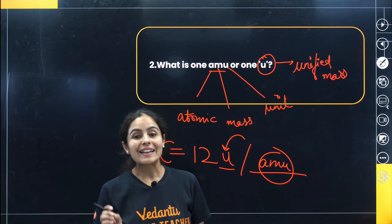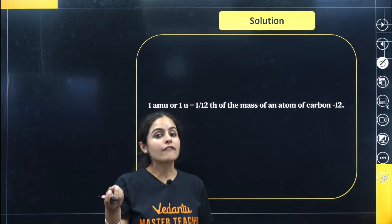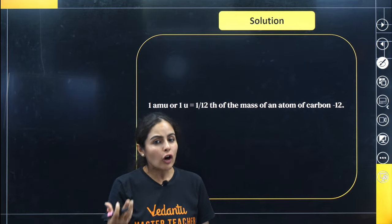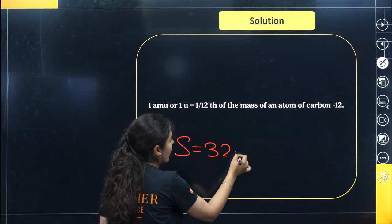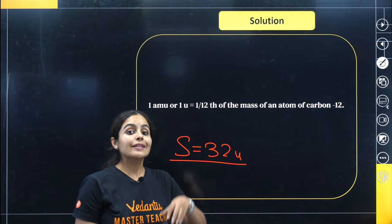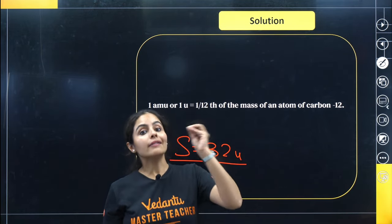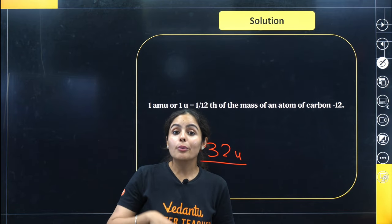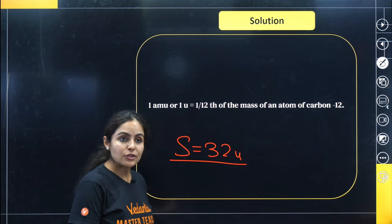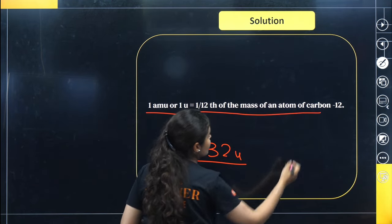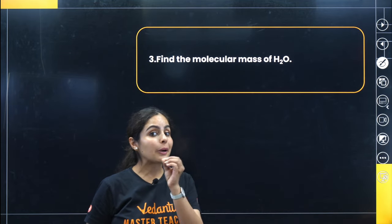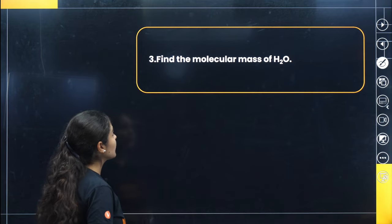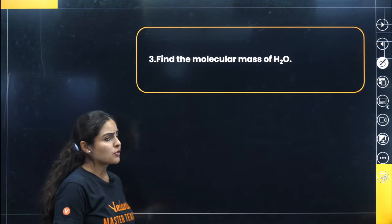So 'u' is unified mass, which is the unit of relative atomic masses. One AMU or one u is defined as one-twelfth the mass of a carbon-12 atom. For example, if sulfur's mass is 32u, it means sulfur is 32 times heavier than one-twelfth the mass of a carbon-12 atom. Similarly, sodium with mass 23 is 23 times heavier than one-twelfth the mass of a carbon-12 atom. Carbon-12 is actually carbon with mass 12; it is one of the isotopes.